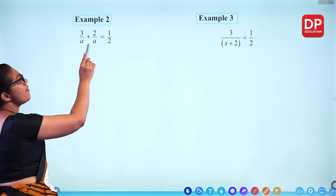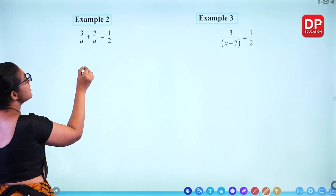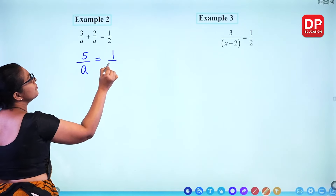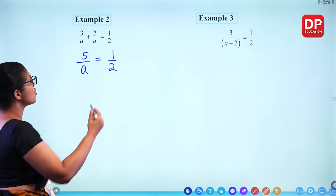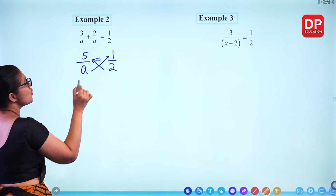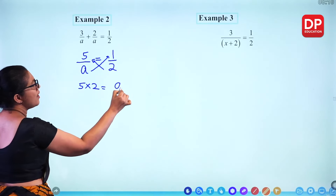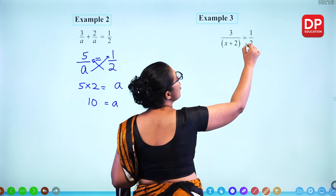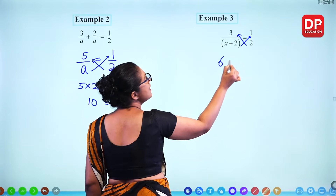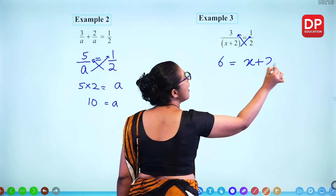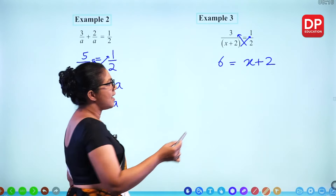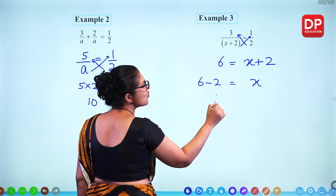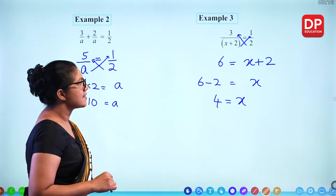Example 2: fractions with the same denominator. Add the numerators: 3 plus 2 is 5. Then cross multiply with the right hand side. 5 times 2 is 10, so A equals 10. Example 3: two fractions already given. Cross multiply: 2 times 3 gives 6, and 1 times (X plus 2) gives X plus 2. So X plus 2 equals 6. Subtract 2: X equals 4.